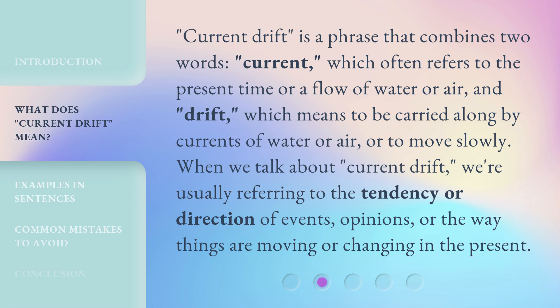Current Drift is a phrase that combines two words: 'current,' which often refers to the present time or a flow of water or air, and 'drift,' which means to be carried along by currents of water or air, or to move slowly. When we talk about current drift, we're usually referring to the tendency or direction of events, opinions, or the way things are moving or changing in the present.